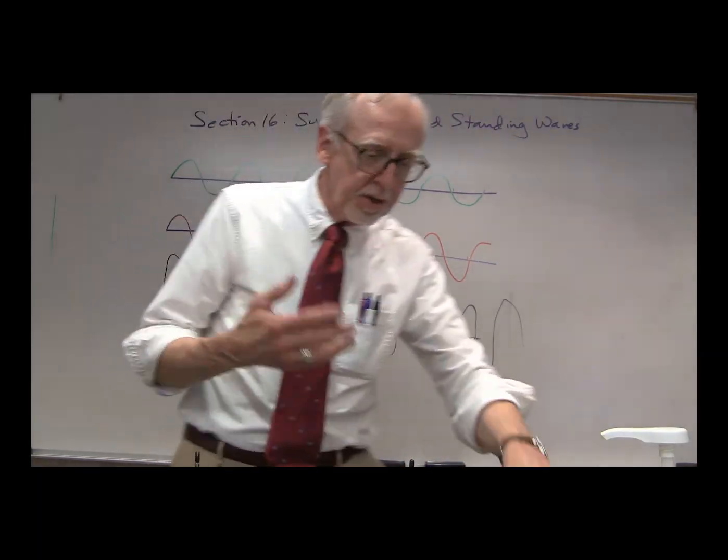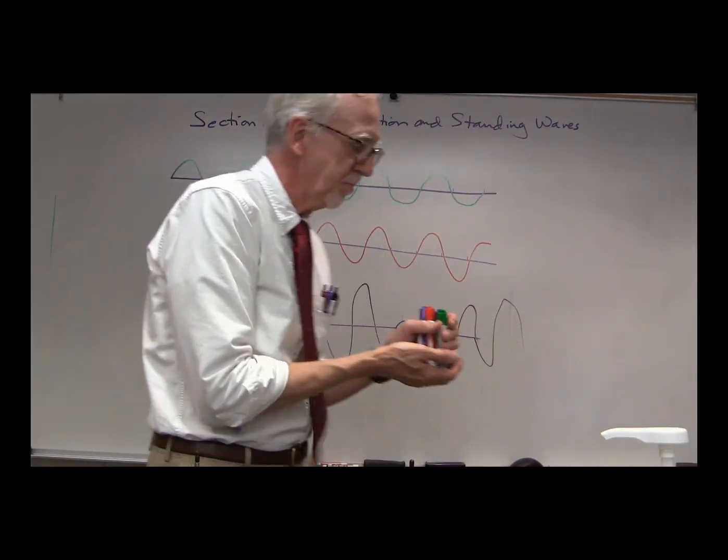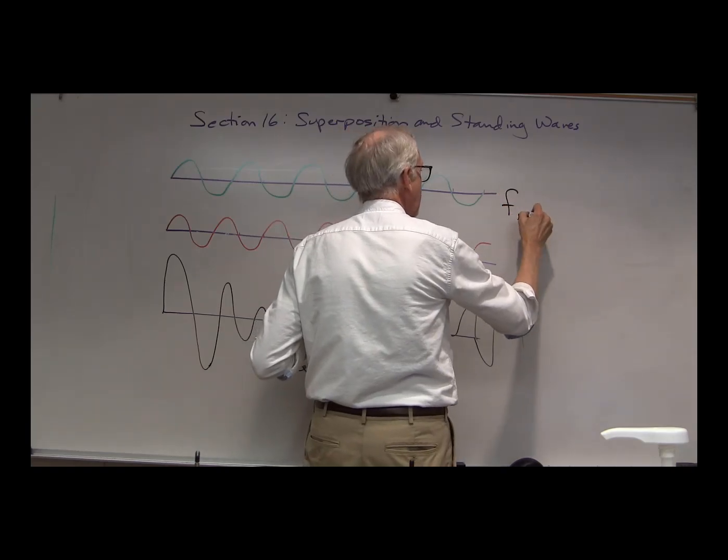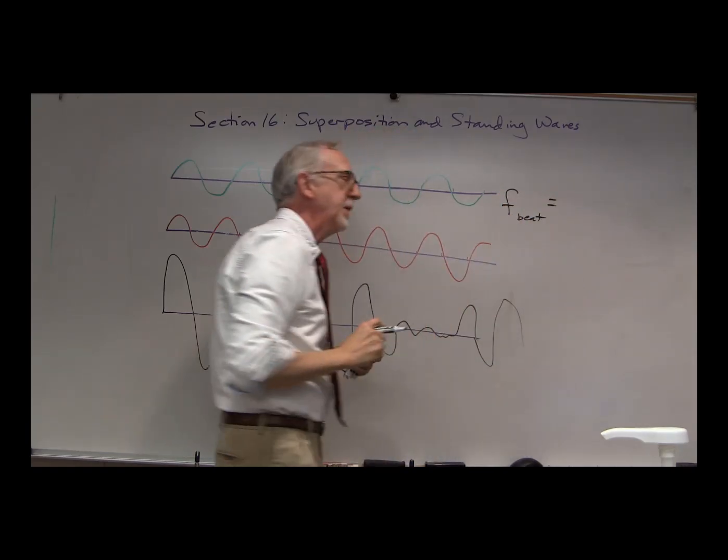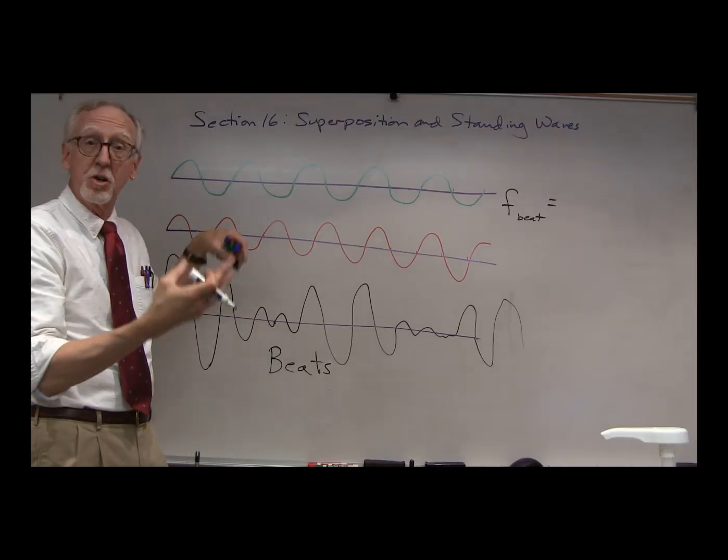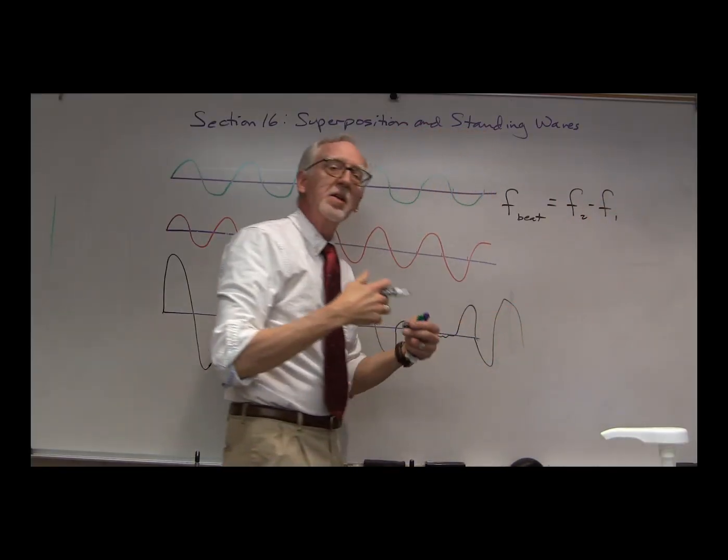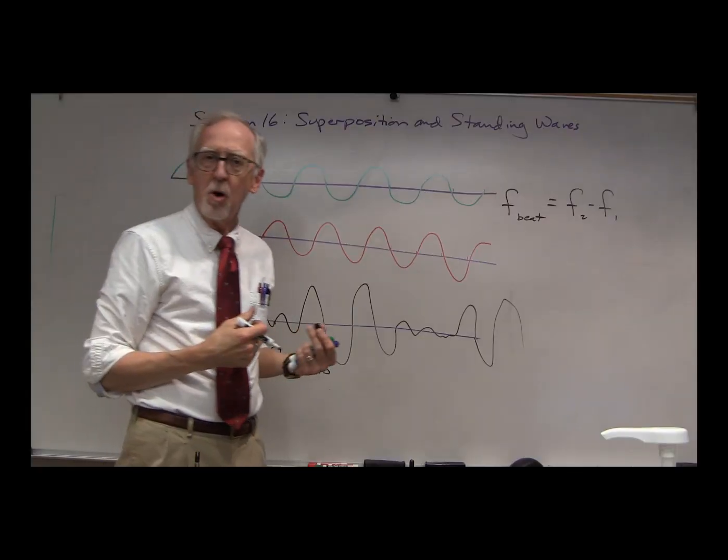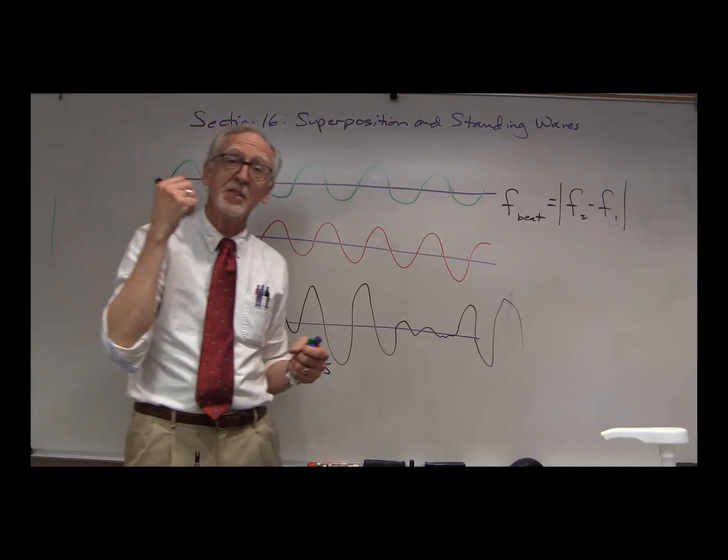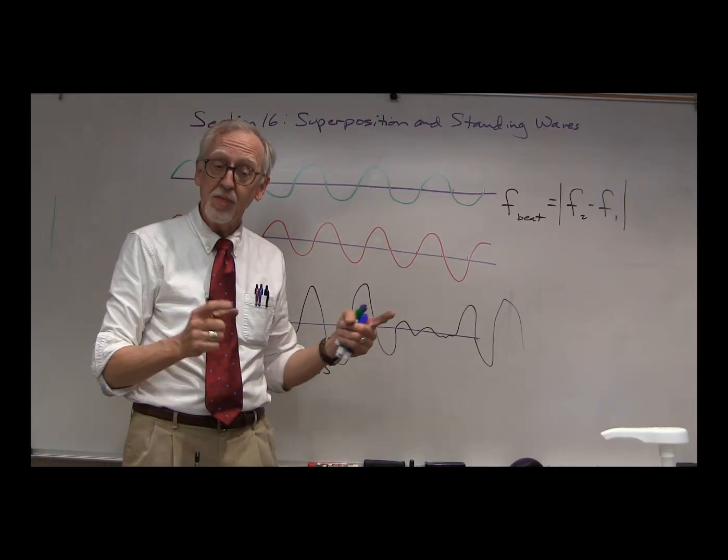It turns out, you can demonstrate this mathematically. I won't go through the derivation. But the frequency of the beats is equal to the difference in the two frequencies that you're combining. So it'll be the larger frequency minus the smaller frequency. Or we could just say it's the absolute value of the difference of the two. And that tells us how often the beats are when the two combine.